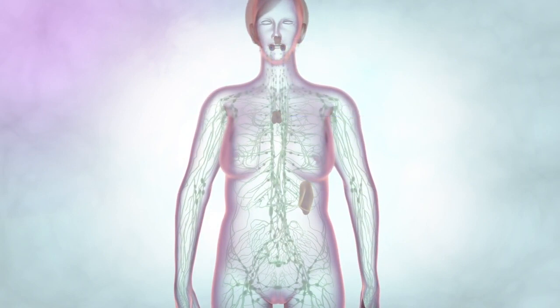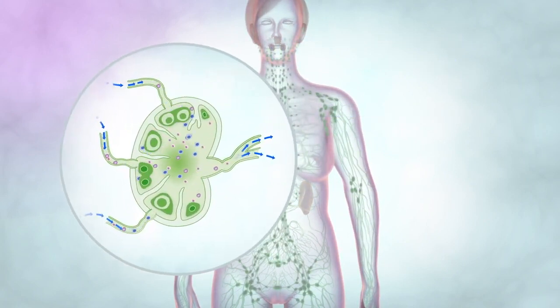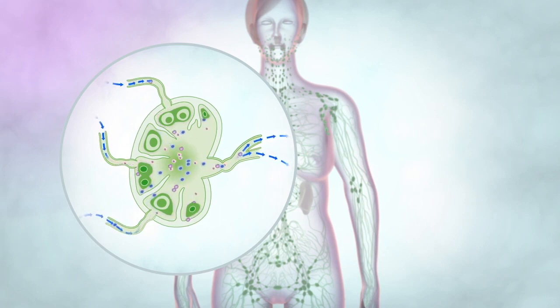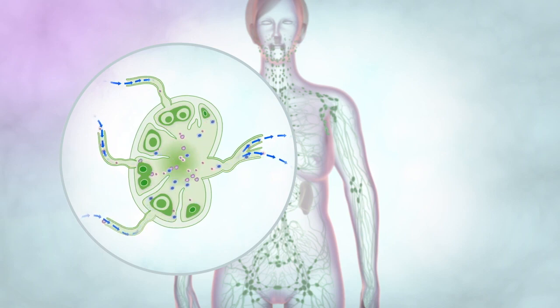Along the lymph vessels are small, bean-shaped lymph glands. You might be able to feel these in your neck, under your arm, and in your groin, but they are also throughout the body, including the chest, abdomen, and pelvis.